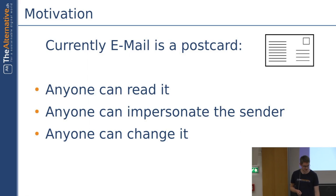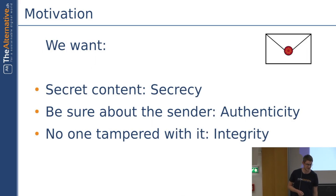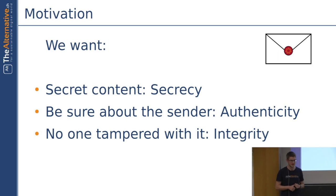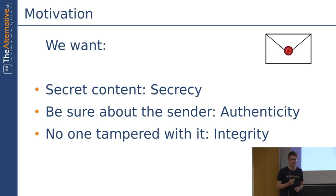This is not desirable in total. So what we want instead is something like a sealed envelope around our mail, which means that we want three things. The first one being secret content, which we call secrecy. Then we want to be sure about the sender, which we call authenticity. And then there is the third thing, where we want that nobody tampered with the mail in between, which we call integrity. So these are the three things we want to attain today.